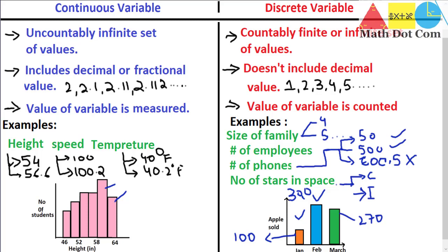These are the basic differences between continuous and discrete variable. Hope it helps. That's all from today's lecture. Thank you.